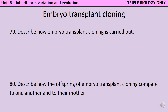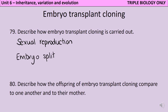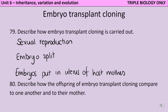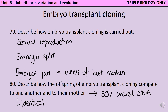The first step in embryo transplant cloning is actually sexual reproduction, which could happen naturally but more commonly in a lab in a Petri dish. Once an embryo has been produced and starts dividing at the 8 or 16 cell stage, those cells are split apart into individual embryos - essentially creating artificial twins. Each embryo is then put separately into the uterus of a different host mother, producing a herd of identical offspring. These offspring are all identical to one another, but they only share 50% of their DNA with their mother, just the same as a normal sexually reproduced offspring.